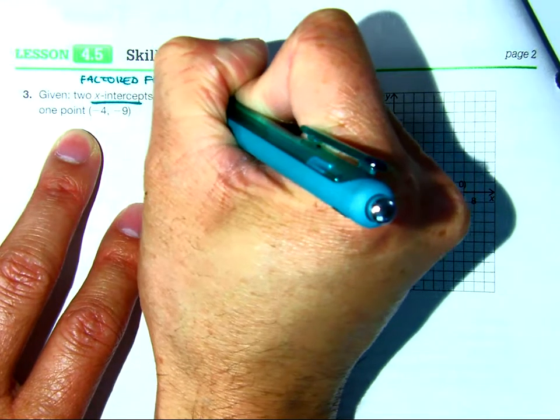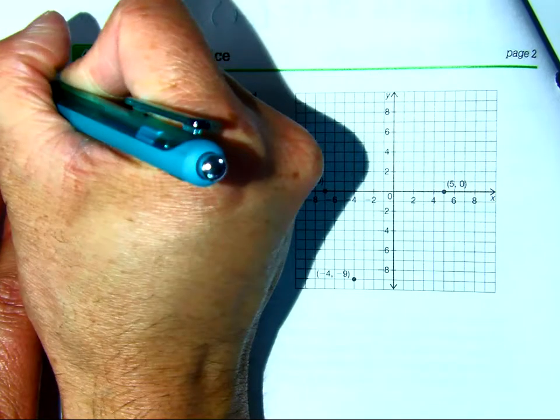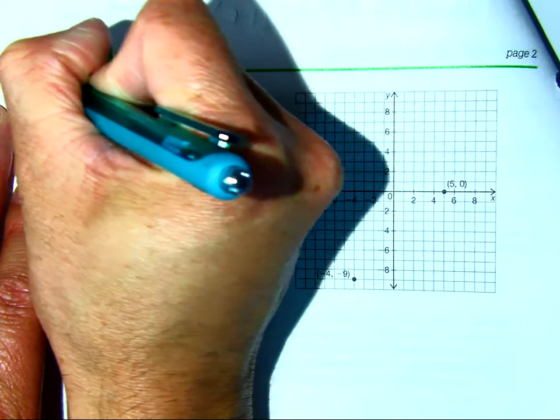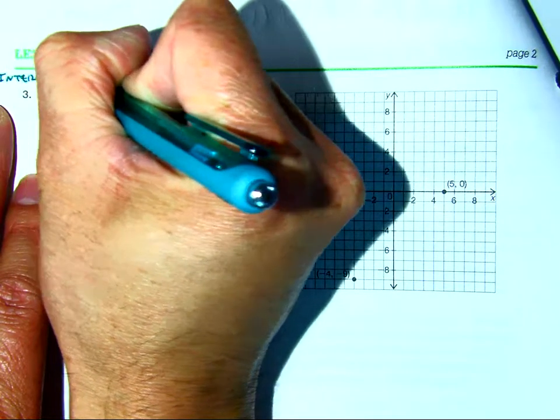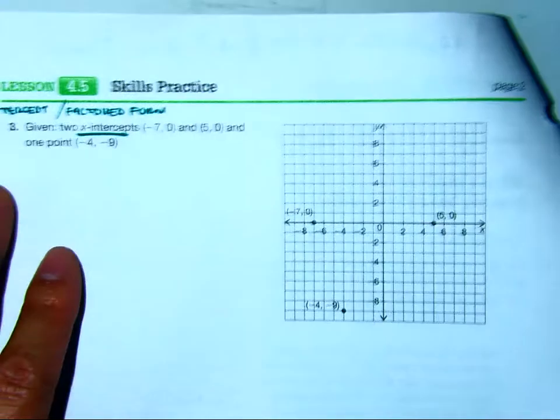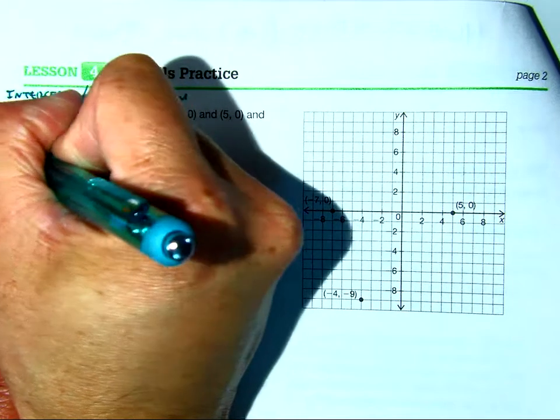So, factored form, or they also call this intercept form. I just showed it to you in the last problem, so the first thing we're going to do is the same thing, find a value.